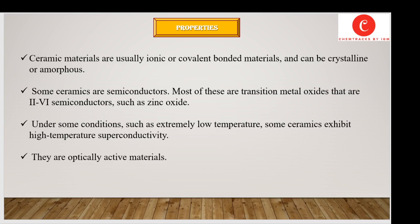There are some specific properties of ceramics that make them different or special from other materials. Ceramic materials are usually ionic or covalent bonded materials and can be crystalline or amorphous. Some ceramics are semiconductors — most of these are transition metal oxides from the group four-to-six semiconductor range, such as zinc oxide. Under some conditions, such as extremely low temperatures, some ceramics exhibit high-temperature superconductivity. Ceramics are also optically active materials.